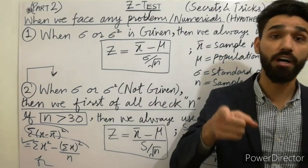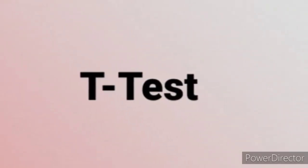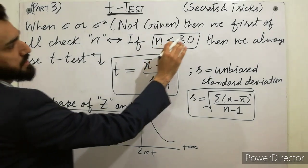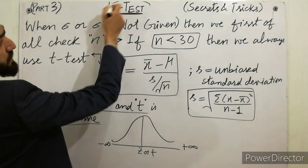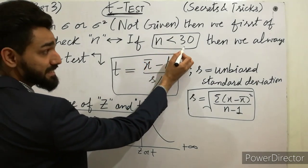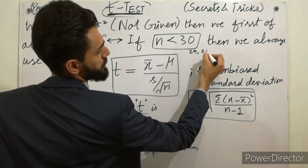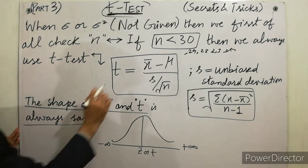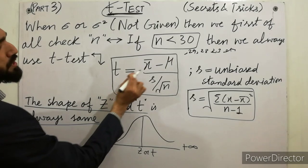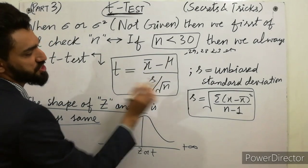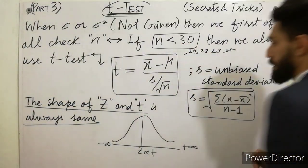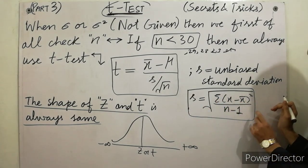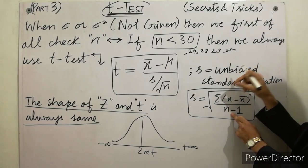Part 3 is the T-test. When sigma or sigma squared is not given and sample size is less than 30 — such as 29, 28, etc. — then we always use the T-test. The formula is T = (x̄ − μ) / (S̃ / √n). This S̃ is the unbiased standard deviation, with formula S̃ = √(Σ(x − x̄)² / (n − 1)). The n − 1 always appears for unbiased S̃.